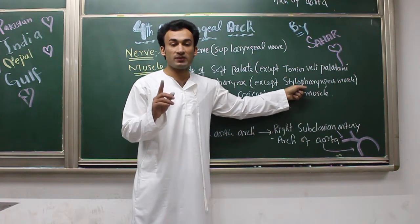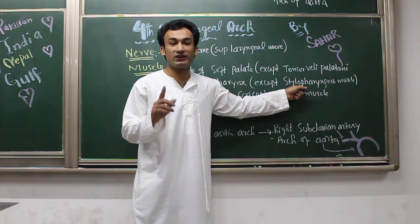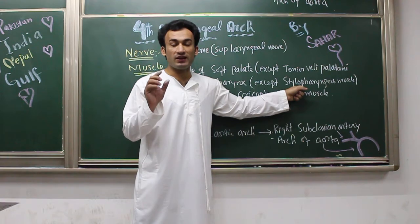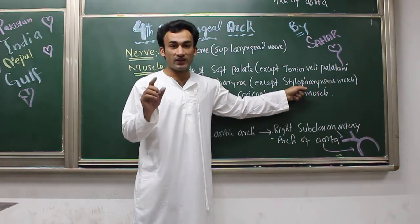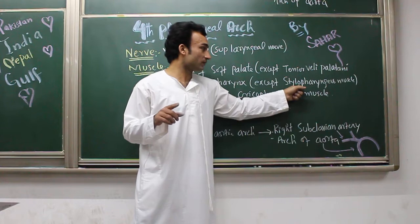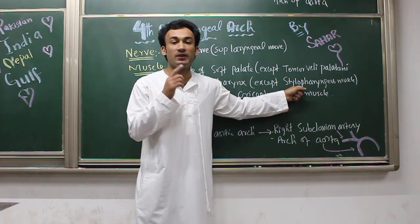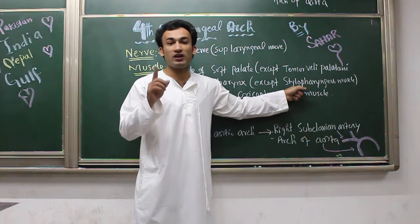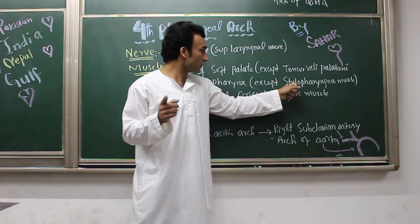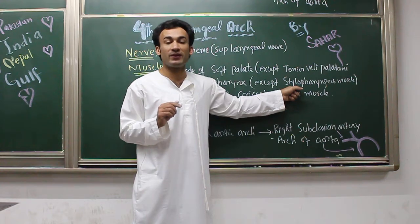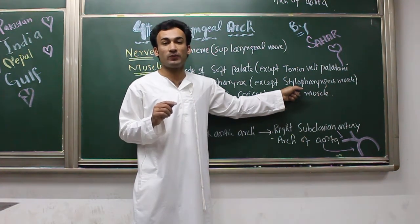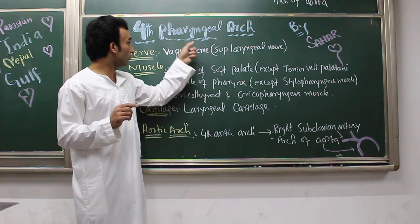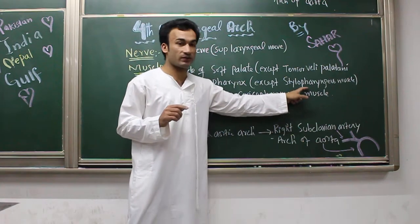Stylopharyngeus muscle is derived from the third pharyngeal arch, and there are MCQs on this: all muscles of the pharynx are supplied by the vagus nerve except stylopharyngeus muscle. That's because stylopharyngeus is derived from the third pharyngeal arch, whose nerve is the glossopharyngeal nerve, cranial nerve number 9. So stylopharyngeus is supplied by CN9, the glossopharyngeal nerve.